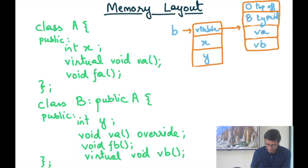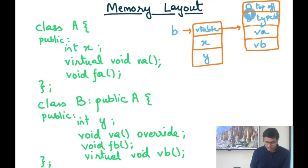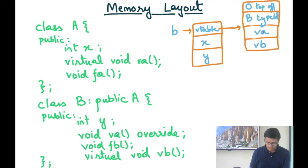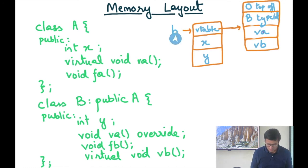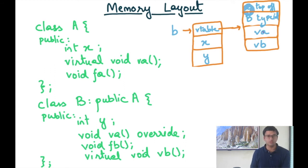Apart from listing the virtual functions, the Vtable also stores extra information. One field is the type ID of the actual object class. Another field is the offset to the top of the object — in this case the value is 0, meaning the top of the object is exactly where the Vtable pointer is. The top offset field is not needed right now but will be required when we discuss multiple inheritance.